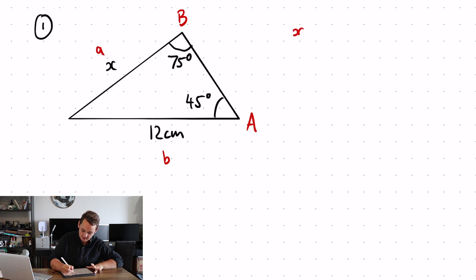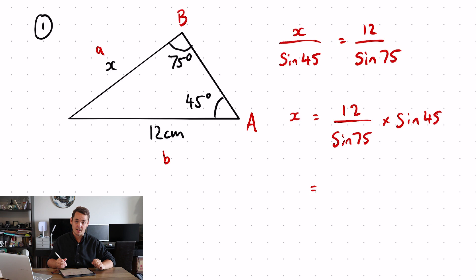A is x, sine A is going to be sine 45, which is equal to B, which is 12 over sine of the opposite angle, 75. To get x by itself, you multiply it up by sine 45, like so, to give you an answer for x at 8.78 centimeters. Did you get it? Hopefully you did.